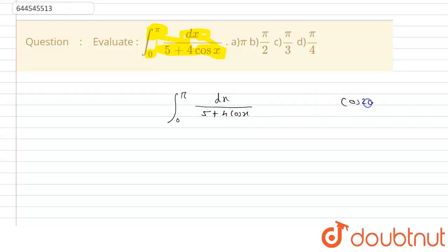So we know that cos 2 theta, that is equals to 1 minus tan square theta upon 1 plus tan square theta. So we can use this formula.